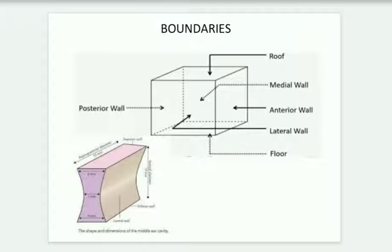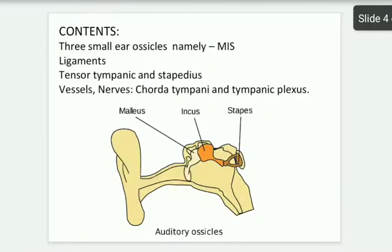The dimensions of the middle ear cavity can be seen in the lower picture: at the roof it is six millimeters, in the middle it is two millimeters, and at the floor it is four millimeters. These are the dimensions of the middle ear cavity.